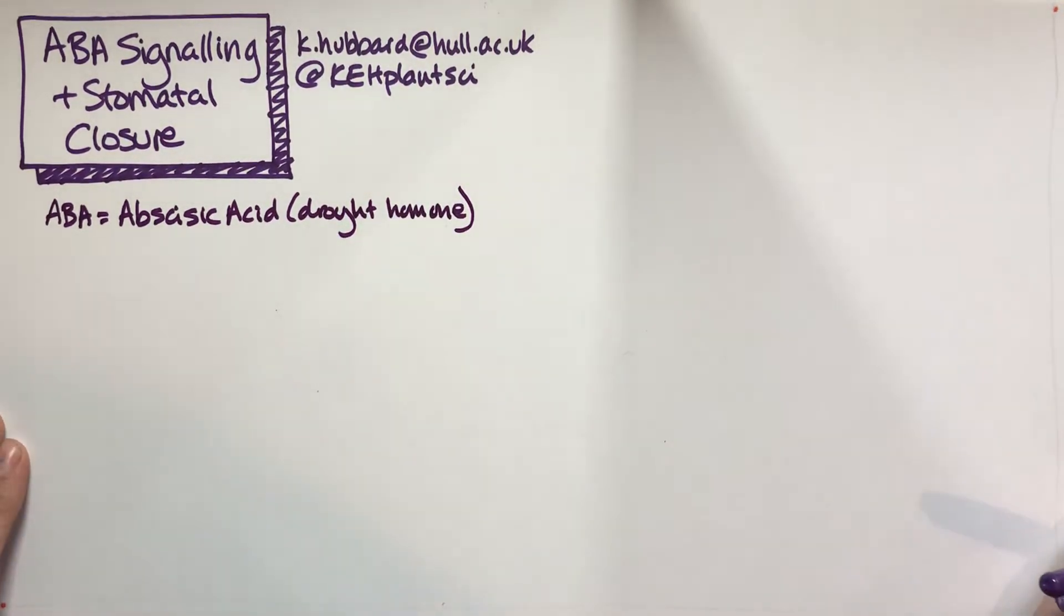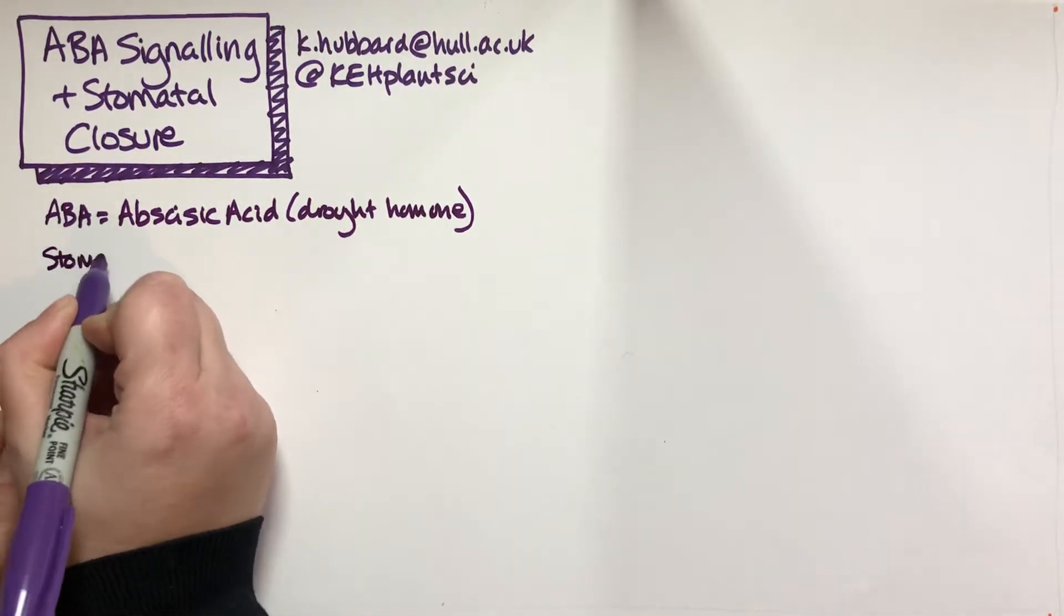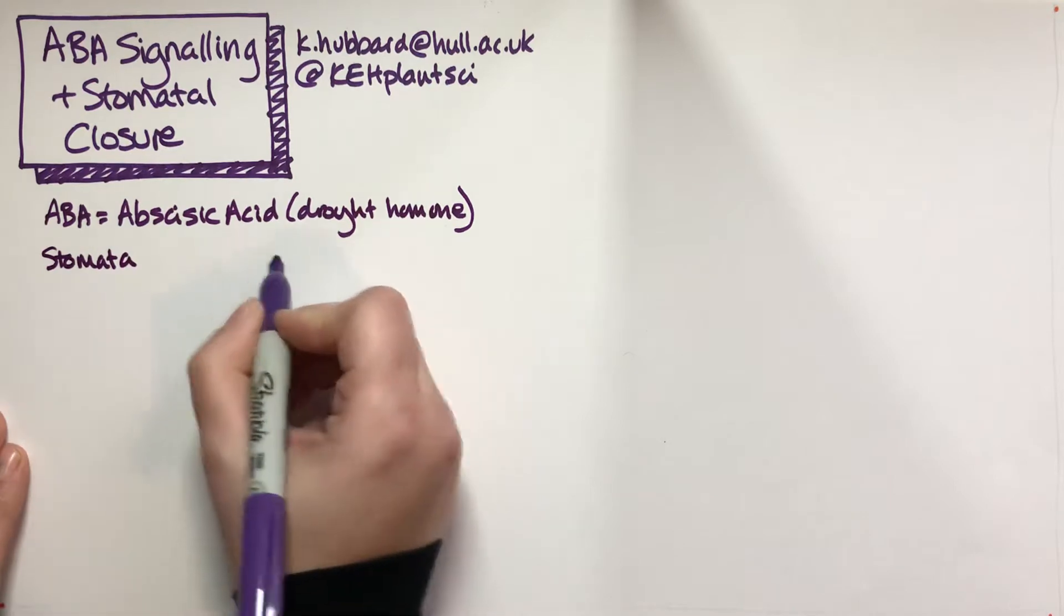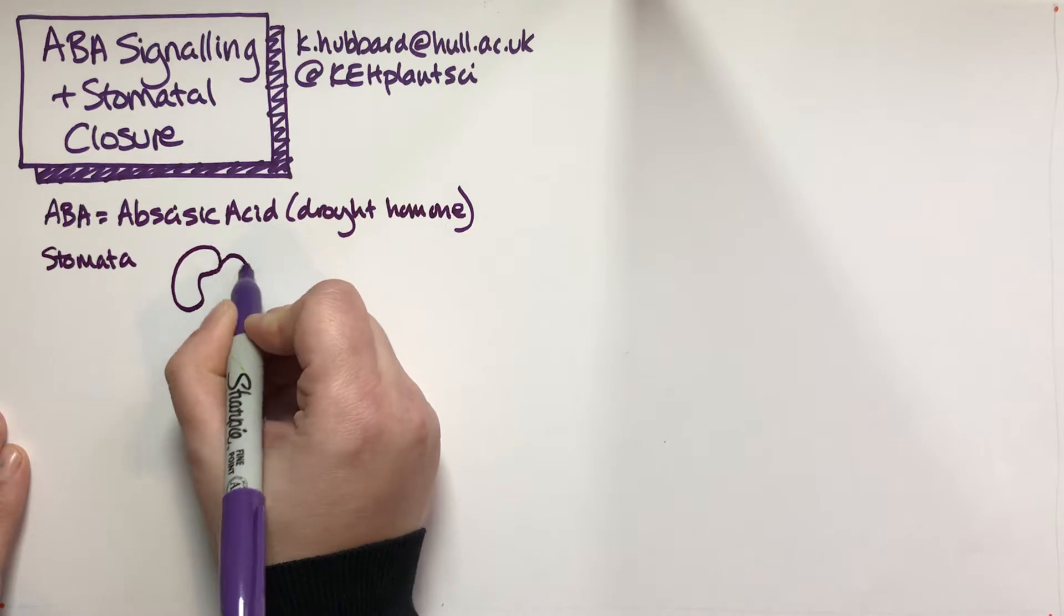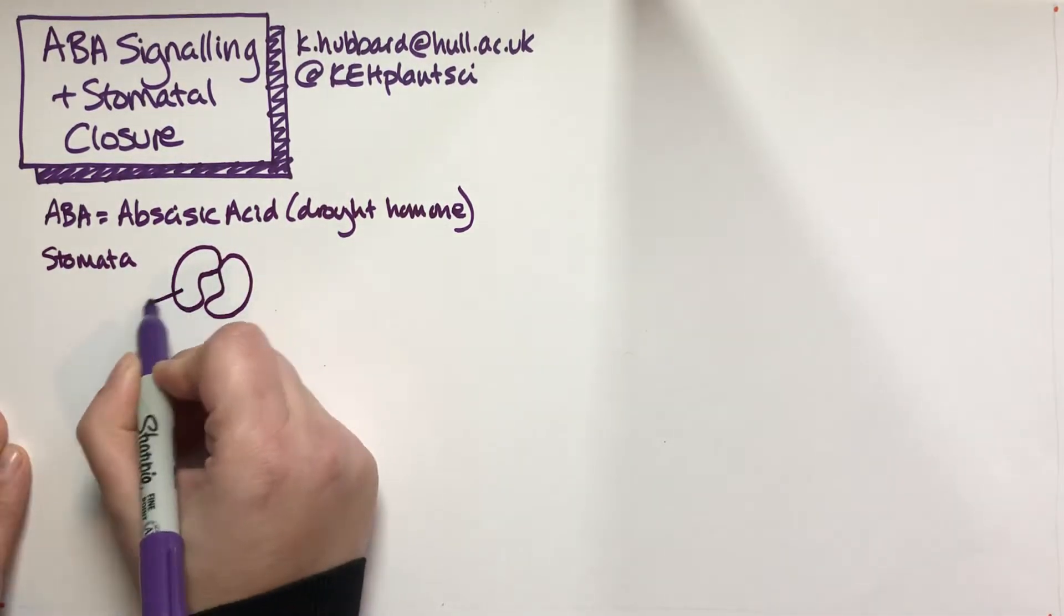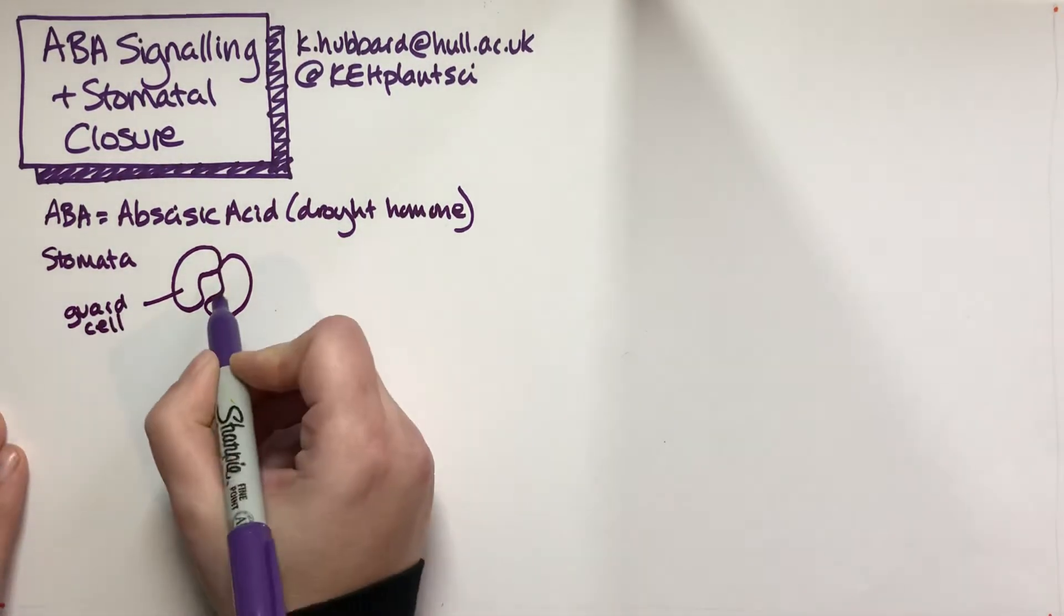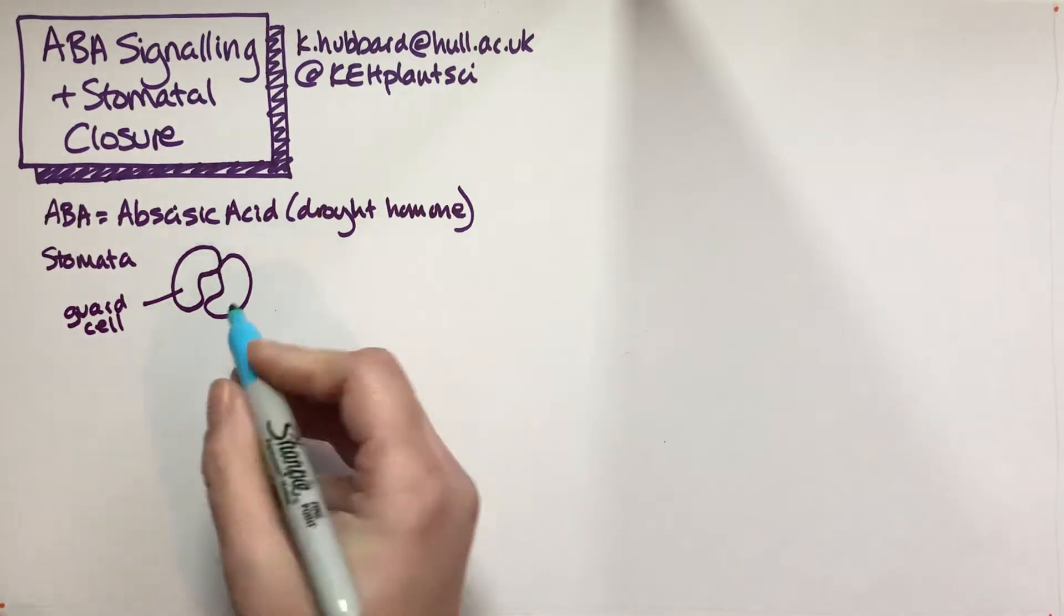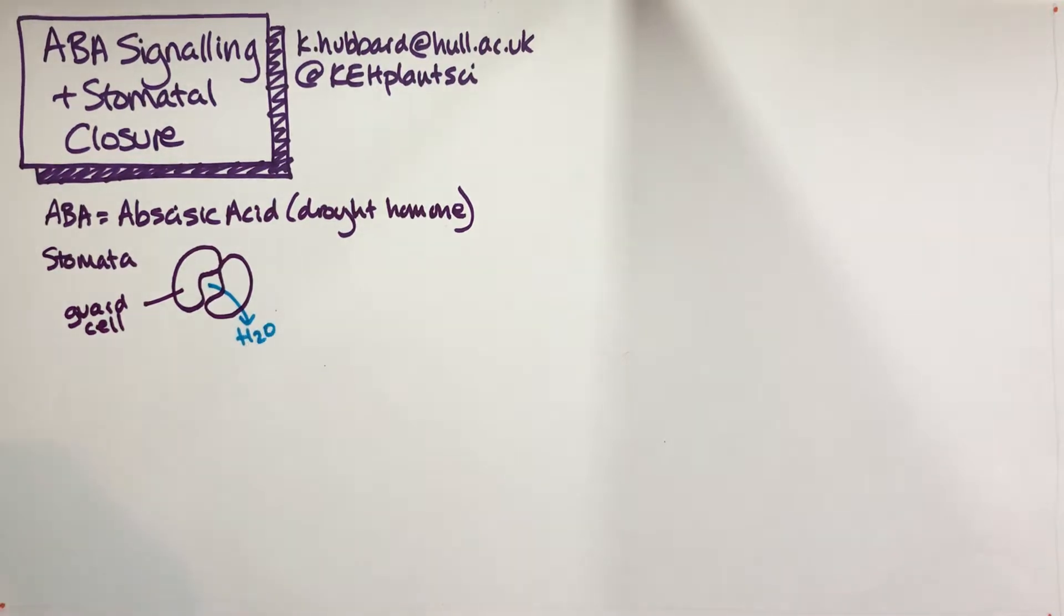ABA is made in the roots in response to drought, travels up to the plant, and initiates a bunch of processes. Most importantly, it regulates plant stomata. A stomata consists of a pair of guard cells, with the space between the two cells being where water is lost from the plant.